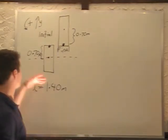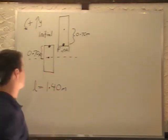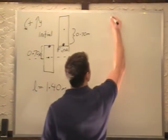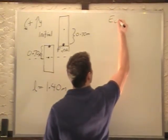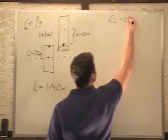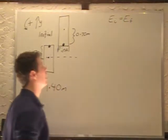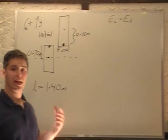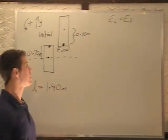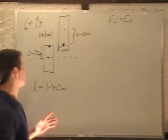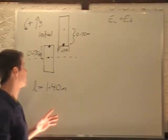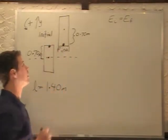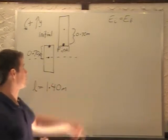So we have this rod we give a kick to and it spins around. We know that our energy is conserved because it says there's no friction in the problem, and there's no one else here to hit it again. It's just hit the first time. That's where the energy enters the system. We have no loss due to friction, so basically it just keeps going around. Energy initial equals energy final.